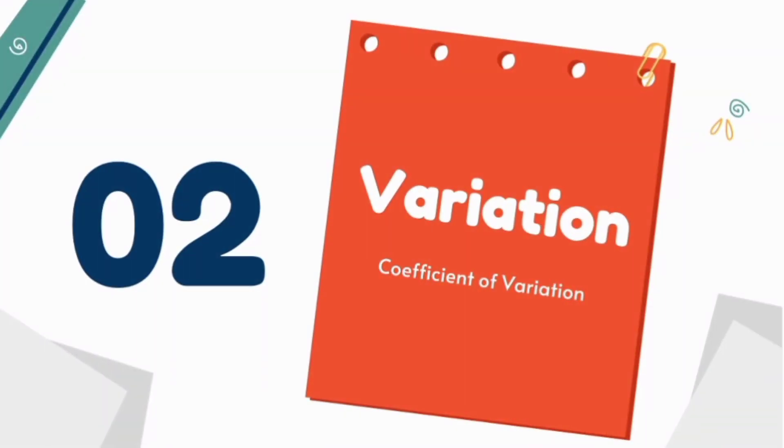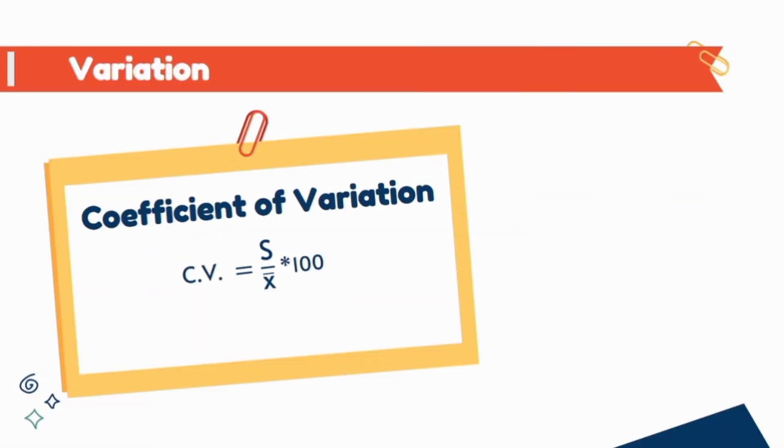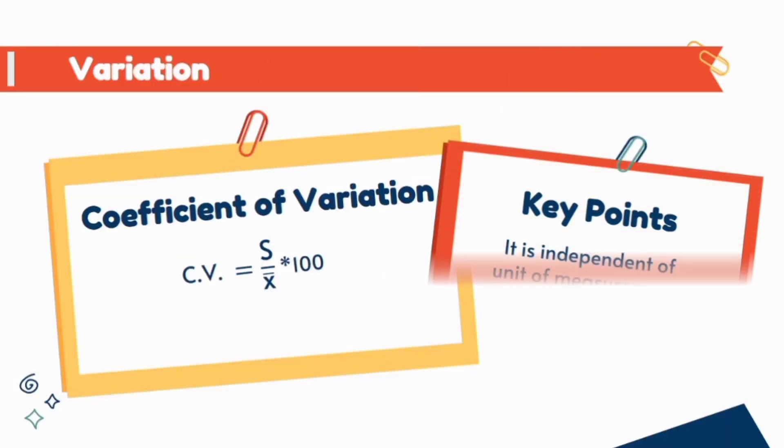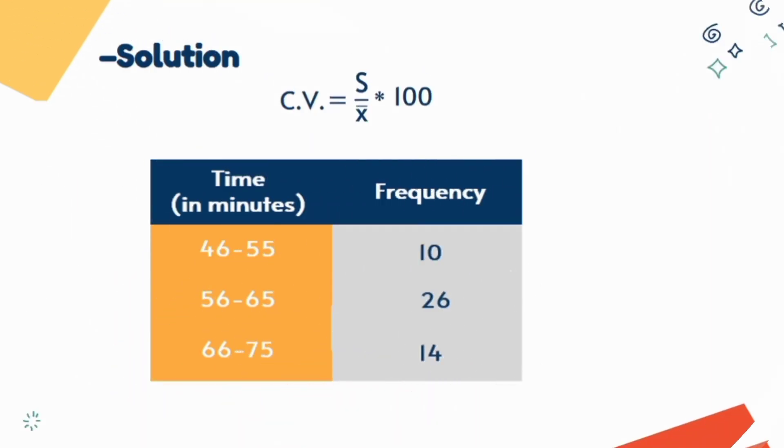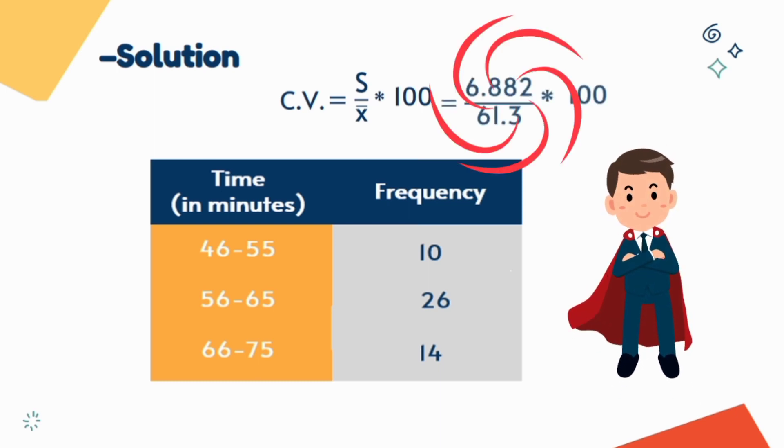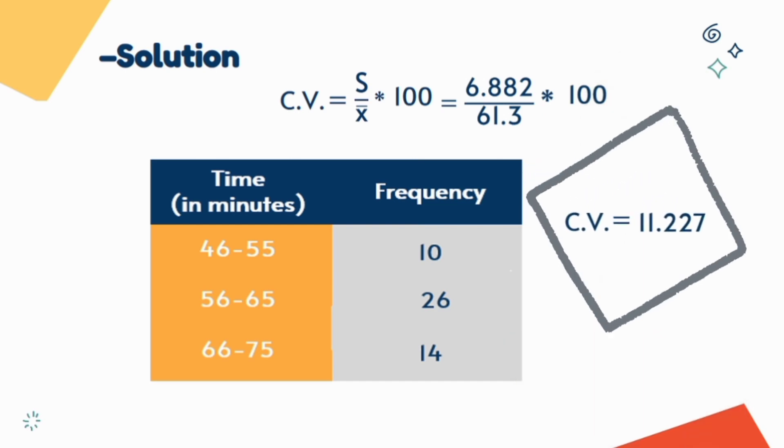In second section we will discuss the coefficient of variation that is used to express the variation in percentage and it is independent of unit of measurement. Here is a formula for calculating coefficient of variation where s is standard deviation and x bar is average. Again here the previous example is used but now we calculate the coefficient of variation. As we have already learned to calculate mean and standard deviation, just put their values in the formula and we get the variation in term of percentage is just more than 11 percent.